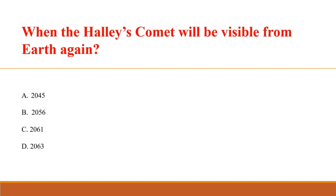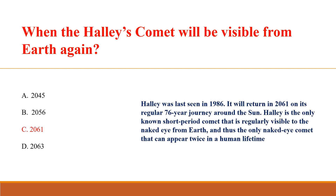When will Halley's Comet be visible from Earth again? Answer C: 2061. Halley's Comet was last seen in 1986 and will return in 2061 on its regular 76-year journey around the Sun. It is the only known short-period comet regularly visible to the naked eye, and the only naked-eye comet that can appear twice in a human lifetime.